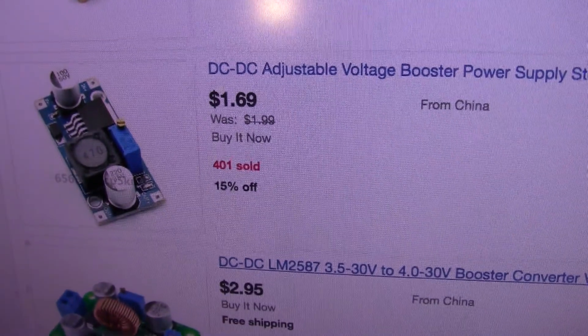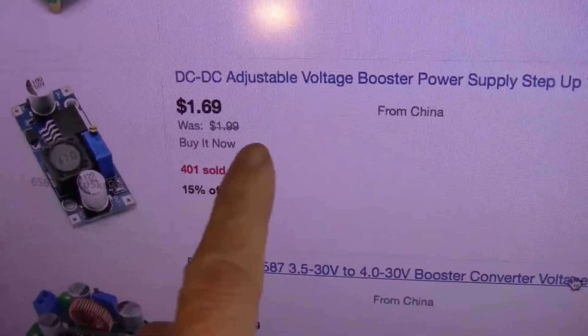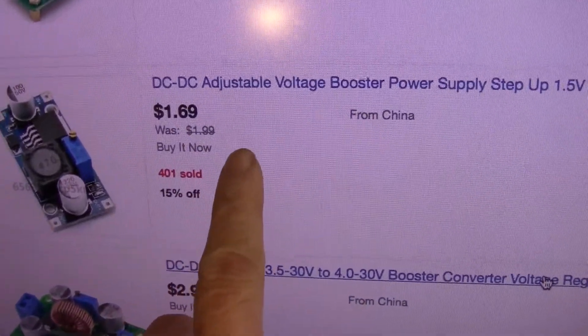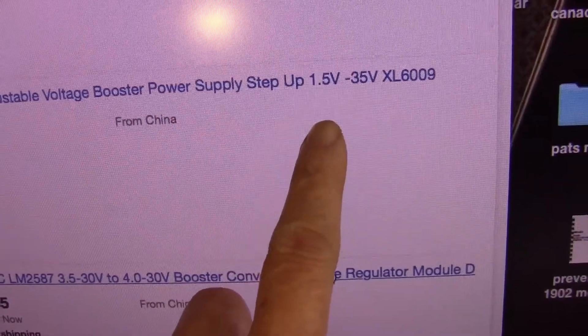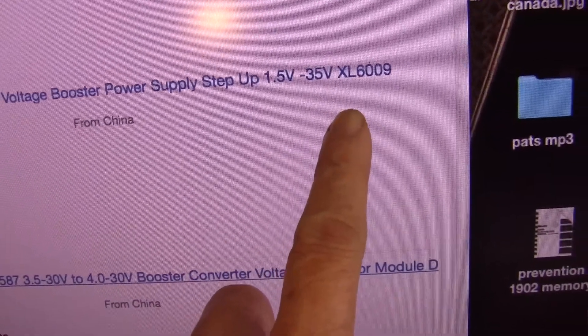Now this is the type of voltage booster that you can find on eBay, DC to DC voltage booster, 1.5 to 35 volt.